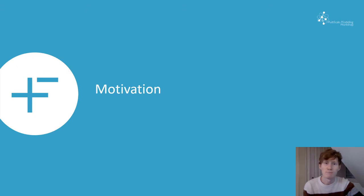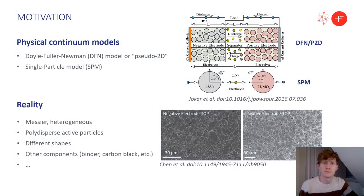The motivation. In the commonly used physical continuum models of a lithium-ion cell, such as the benchmark Doyle-Fuller-Newman model, or DFN for short, the active particles are all assumed to be the same size and shape. The same is obviously true for the single particle model, or SPM, which assumes all particles in an electrode behave in unison, so you only model one representative particle.